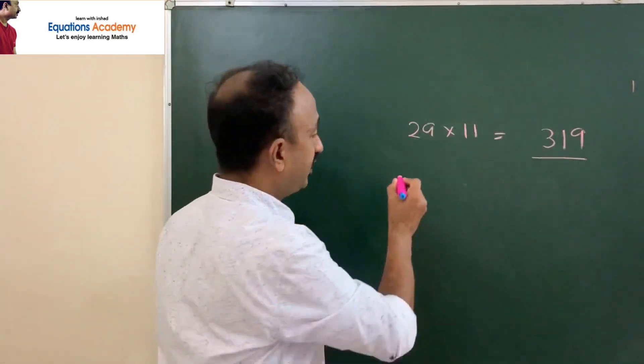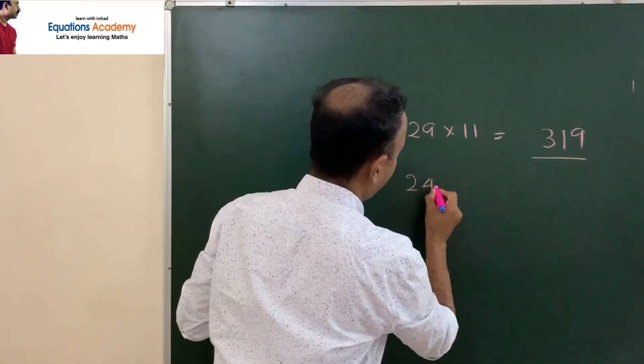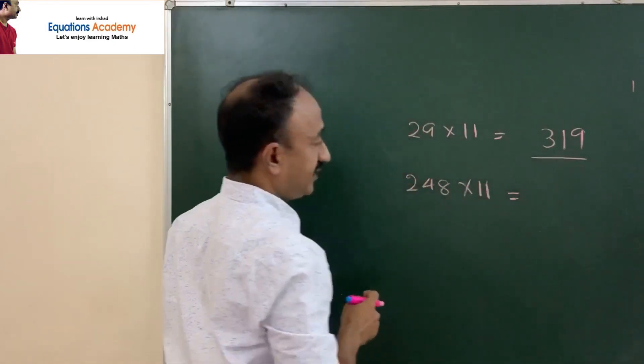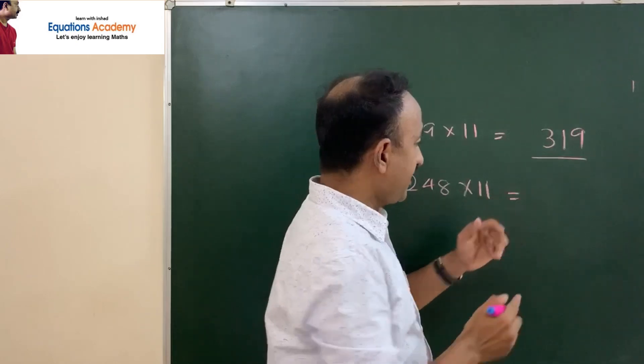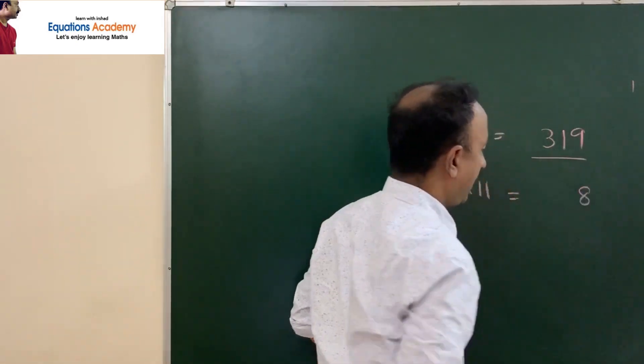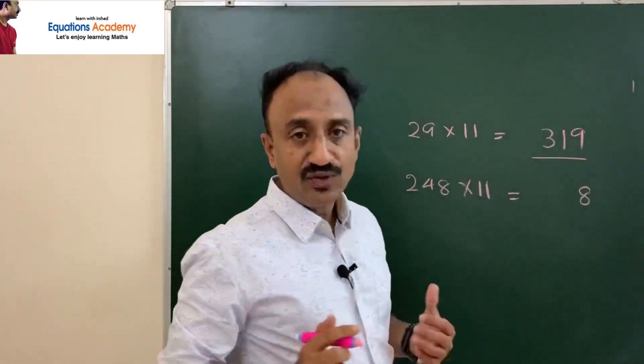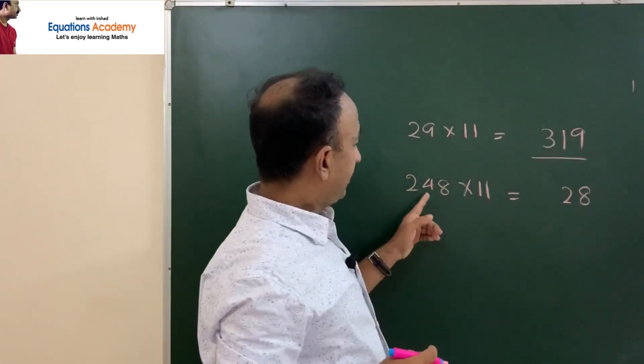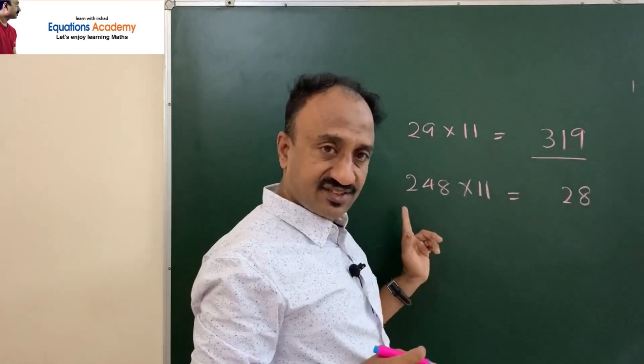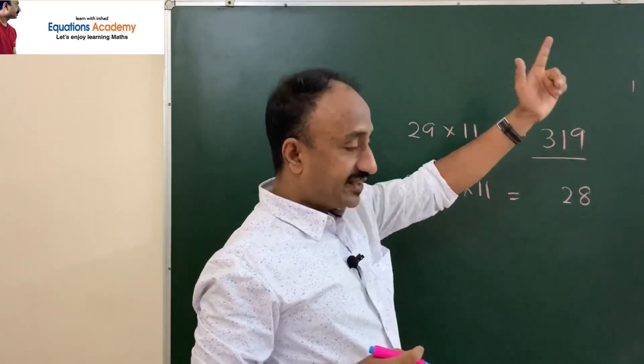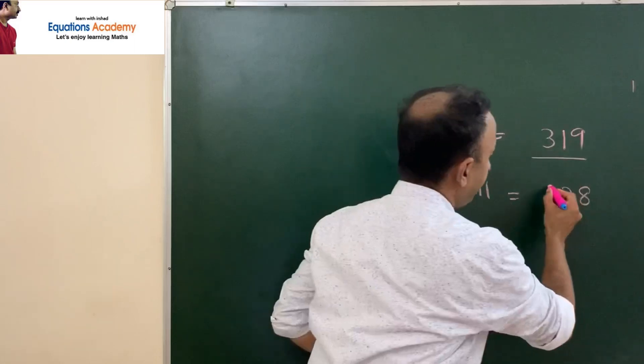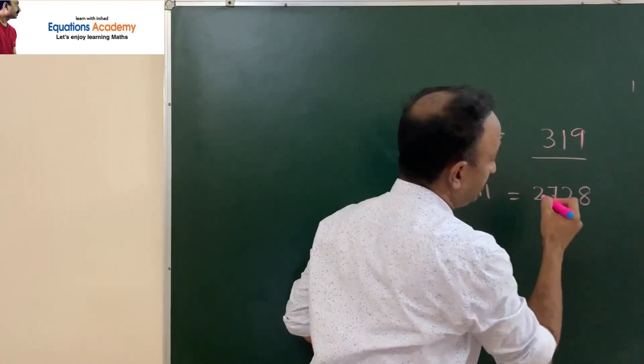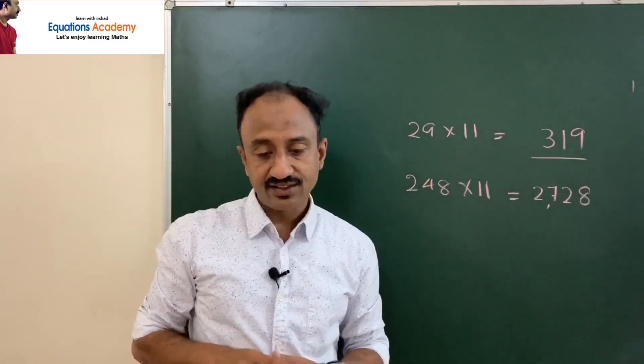What about 248 times 11? First, we keep this 8 as it is. 8 plus 4 is 12. We put 2 there. 1 is carried forward. Then 4 plus 2 is 6, plus that carry forward 1. 6 plus 1 is 7. Then keep this 2 as it is. So it is 2728.